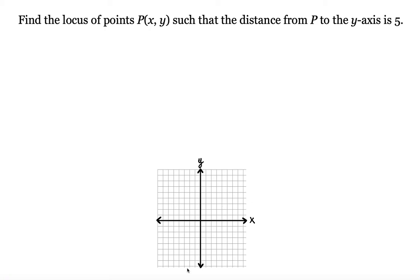Graphically, this is the Y-axis, and the distance from this Y-axis on both sides of it should be exactly 5. So the locus in this case will be a straight line. We can count 5 boxes to the right and left from the Y-axis.